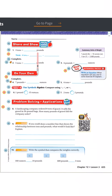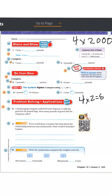Number one: four tons equals how many pounds? Looking at the conversion chart, one ton equals 2,000 pounds. So four tons is four times 2,000. Four times two equals eight, and then I add on the three zeros. So four tons is the same as 8,000 pounds.